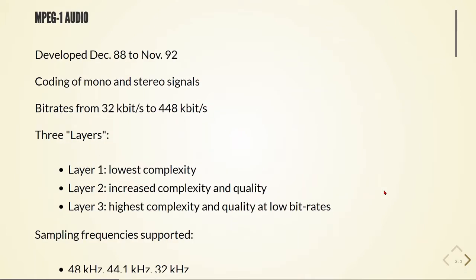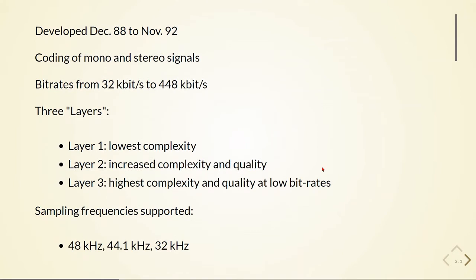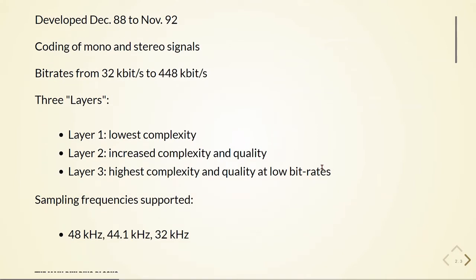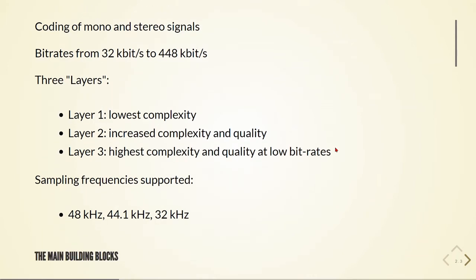The MPEG-1 audio was developed from December 1988 to November 1992, and it deals with the coding of mono and stereo signals using bit rates from 32 kilobits per second to 448 kilobits per second. It has three layers: layer 1 with the lowest complexity, layer 2 with increased complexity and quality, and layer 3 with the highest complexity and quality at low bit rates. It supports sampling frequencies of 48 kilohertz, 44.1 kilohertz, and 32 kilohertz.